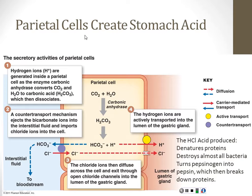The fact that parietal cells can produce acid is kind of remarkable, really. Acid, by its very nature, is destructive to living cells. This system for producing acid is sort of unique in the body and happens because of cellular machinery arranged just for this purpose.